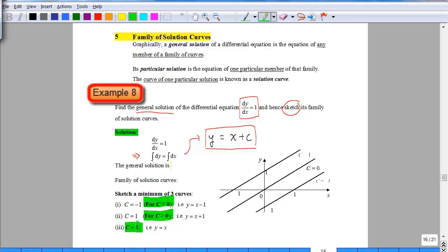Usually, we will ask you to write out the solution curve for a particular value of c which is perhaps less than 0, bigger than 0, and equals to 0. So we need you to give a minimum of 3 curves. In this example, we have chosen 3 values: c = -1, c = 1, and c = 0. With those values of c, one solution curve is y = x - 1, another is y = x + 1, and the third one gives you y = x. These are the 3 solution curves for dy/dx = 1.